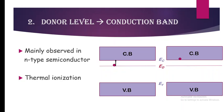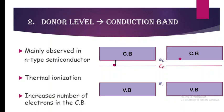That electron becomes free and contributes to conductivity. This type of transition increases the number of electrons in the conduction band. We consider one electron for simplicity, but actual semiconductors may have many electrons depending on the concentration of dopants added.